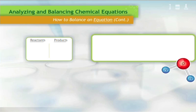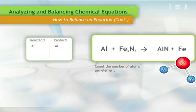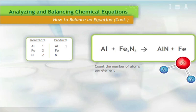For practice, let us balance another equation. First, count the number of atoms per element on the reactant side and product side of the equation. In this case, this is 1 Al, 3 Fe, and 2 N on the reactant side, and 1 Al, 1 Fe, and 1 N on the product side.